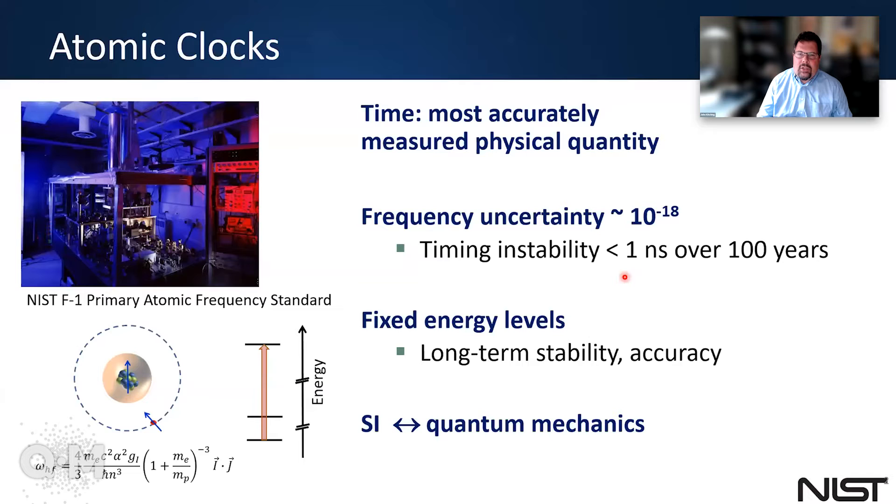In fact, clocks now are achieving frequency uncertainties in the range of 10 to the minus 18, which is truly amazing. This basically means that you can maintain timing error better than one nanosecond for basically as long as you want. And further improvements are still developing in this area.